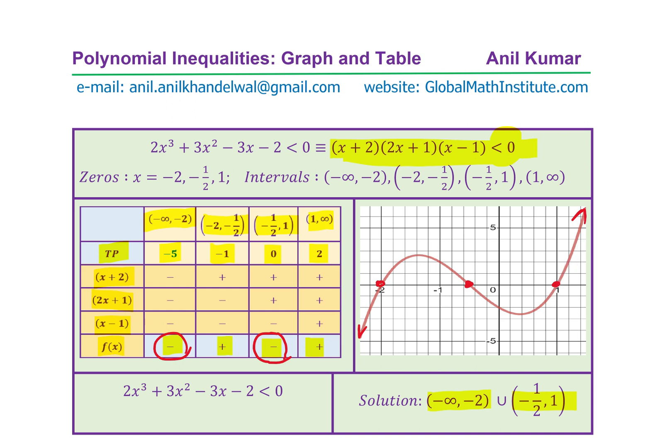And clearly, we are looking for an inequality, which is that the function f(x) is less than zero means negative portion. So it is negative in this interval and the interval from -1/2 to 1. So that becomes the part of our solution for the given inequality, which is 2x³ + 3x² - 3x - 2 < 0. Is that clear to you? So that is how we are going to solve such inequalities.